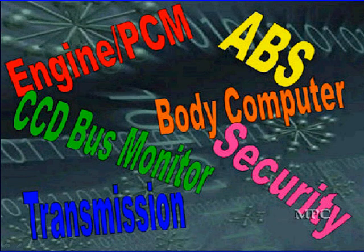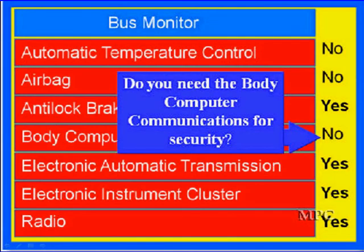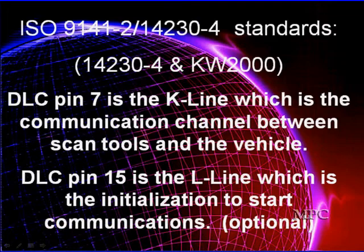What we're going to be doing in this program is taking you beyond the routine stuff. When we have a routine failure, we get a bus monitor status like this, and we see which buses we cannot talk to. In this case, we're showing an example where the body computer doesn't talk, and we're asking: do you need the body computer communications for security? The answer is yes. What happens when nothing can talk and we have a total bus failure? Your scan tool is no longer of value to you, or it's on a bus the scan tool doesn't talk to.